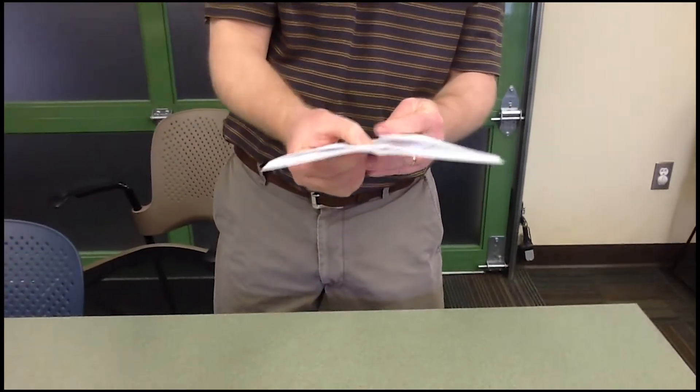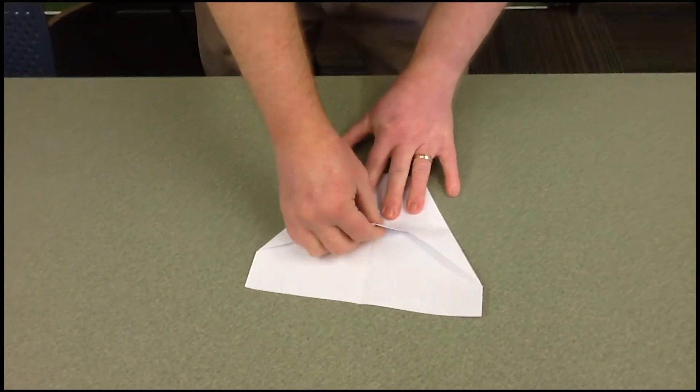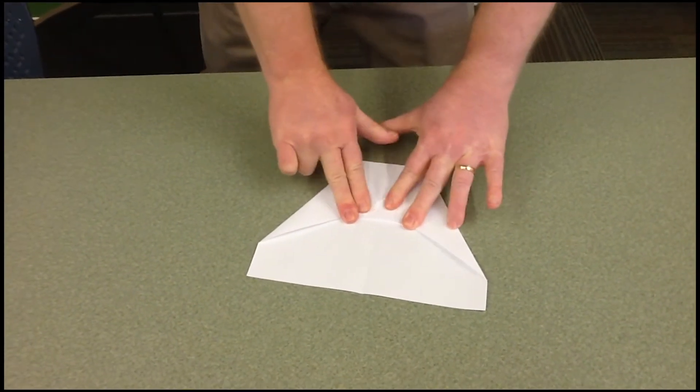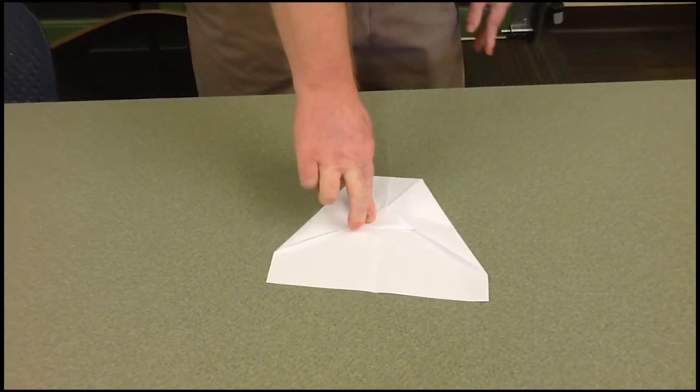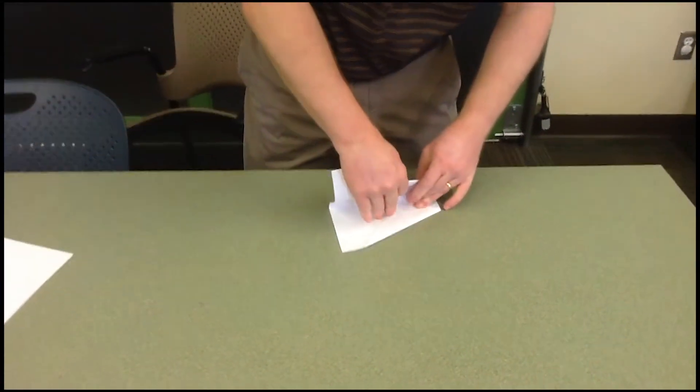Then you have this piece right here that we're going to fold up. So it's kind of like a little triangle there. You're going to fold it up like that. Okay? Then fold it in half again.